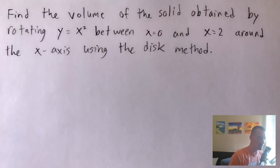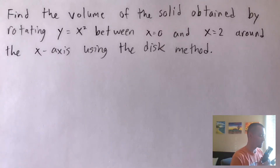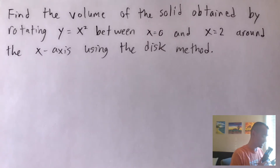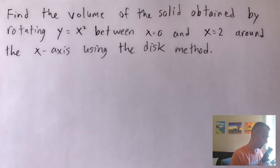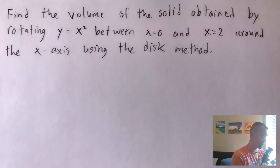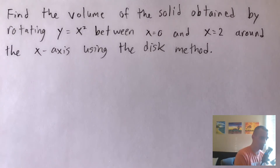Hey guys, Jake here coming at you with another math problem today. I'm going to be showing you how to find the volume of the solid obtained by rotating y equals x squared between x equals 0 and x equals 2 around the x-axis, and we're going to be doing this using the disk method.